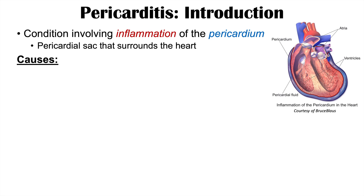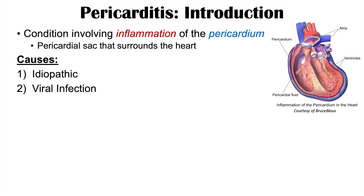What are some of the causes of pericarditis? By far, some of the most common are going to be idiopathic causes, which means that the cause itself is not entirely known. However, some known causes include viral infections — you can think of Coxsackie viruses as potential viral infections that can cause pericarditis. Some other ones include parvovirus B19.